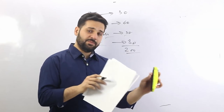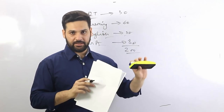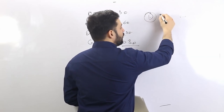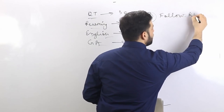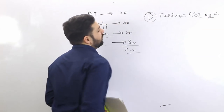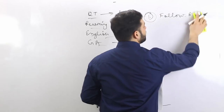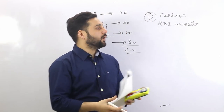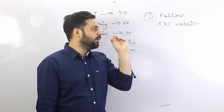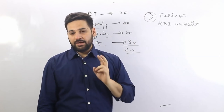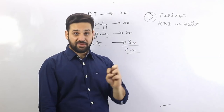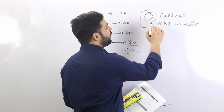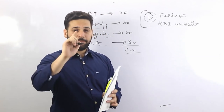For RBI Grade B GA, you need to read whatever you have for IBPS PO — if you're reading a monthly GK Digest, keep reading it. But for RBI Grade B there are a few extra things. First, follow the official RBI website — rbi.org.in. In the RBI website's top menu, there is a notices or notifications section. Go through that daily. There are two or three notifications on the RBI website daily. That is the best source of banking awareness and financial awareness topics.